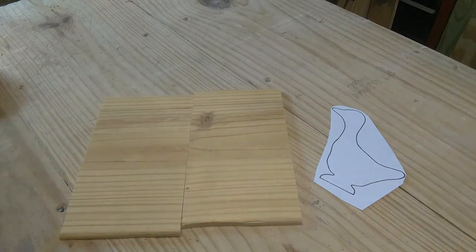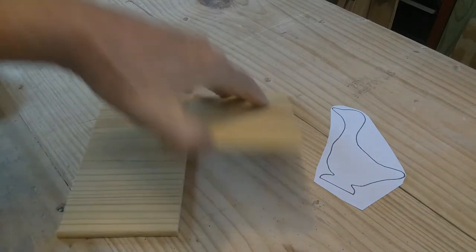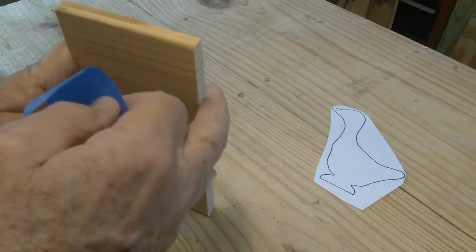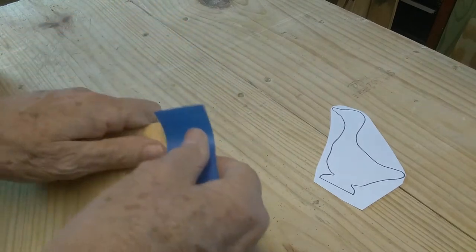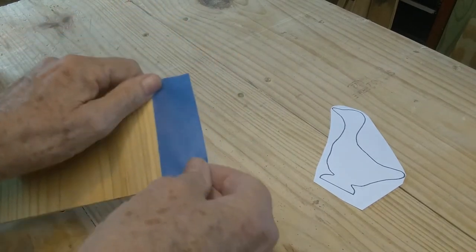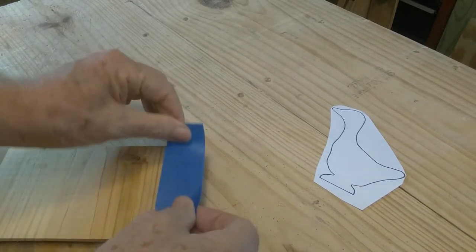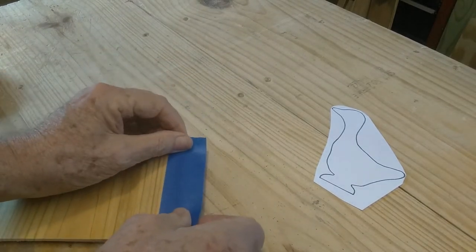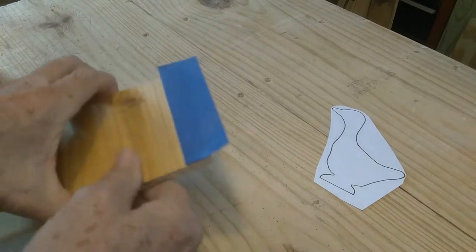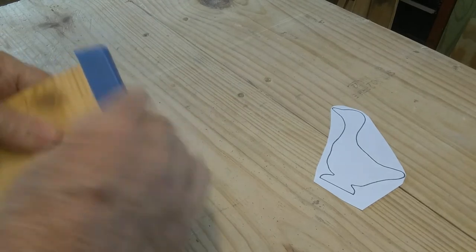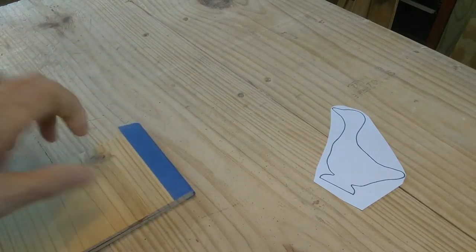What I like to do is tape the edges first, get them together like that and I have a piece of tape pretty much cut to the size. Put that on it. Make sure you keep everything straight, fold it over.